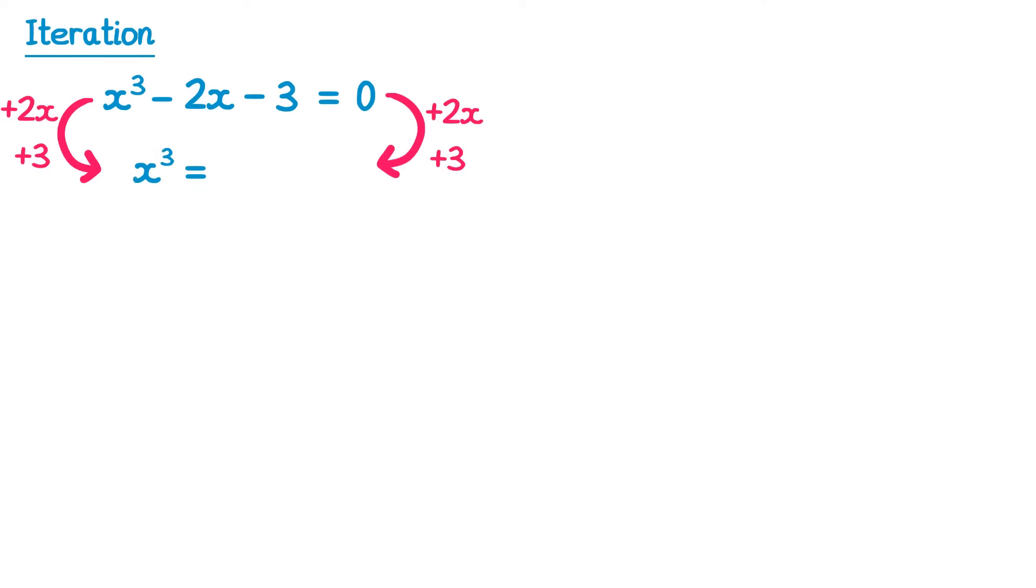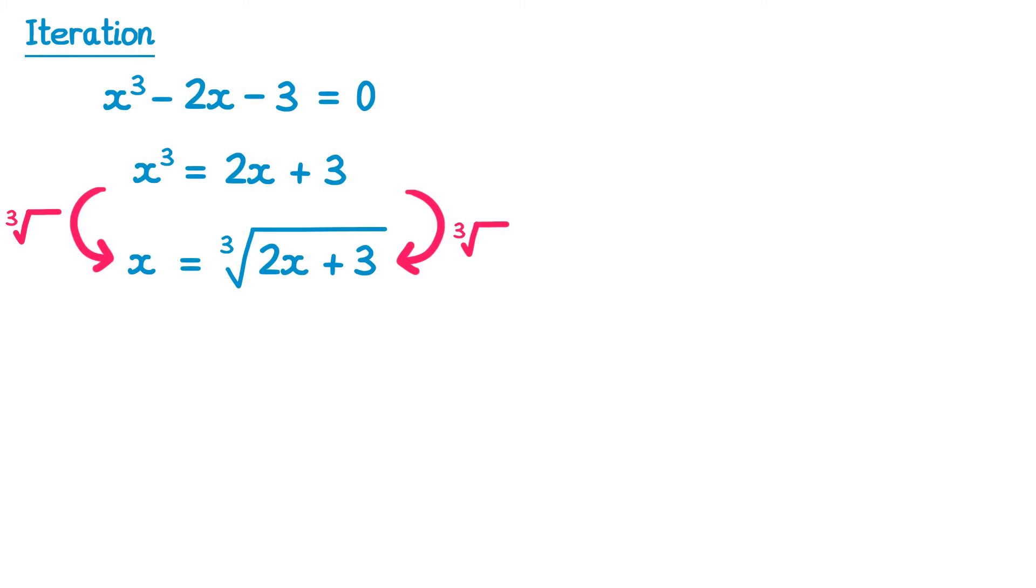On the right hand side, 0 add 2x add 3 is 2x add 3. The next thing to try and do is remove the cubed. The inverse of cubed is cube root, so we'll cube root both sides. If we cube root the left we just get x, and if we cube root the right we get the cube root of 2x plus 3.